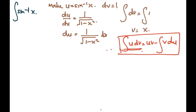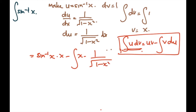So now this equals u — u is inverse sine x — multiplied by v, where v is x, and then minus the integral of v du: v is x and du is 1 over √(1 - x²) dx. So simplifying: inverse sine x times x, and this integral goes back to integration by substitution.